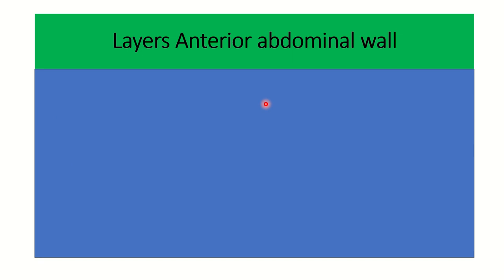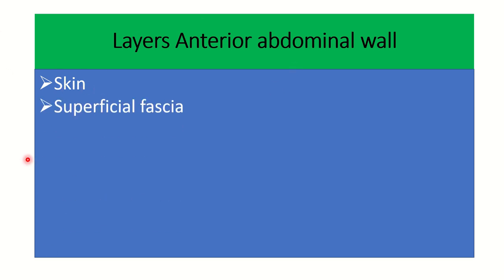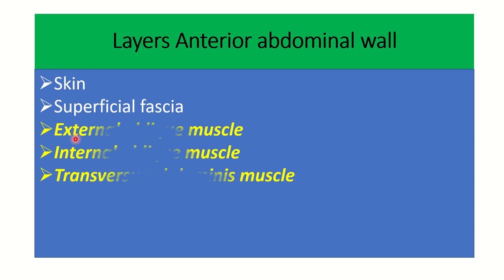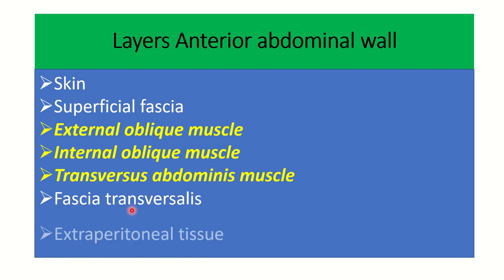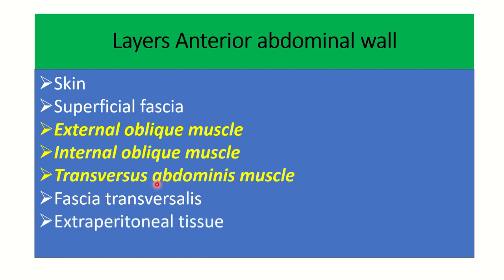Quick recap of the layers of the abdominal wall: skin and superficial fascia — no deep fascia — then the three important muscles: external oblique, internal oblique, and transversus abdominis. Then fascia transversalis, which is the fascia of the transversus abdominis muscle, then extraperitoneal connective tissue, and parietal peritoneum.